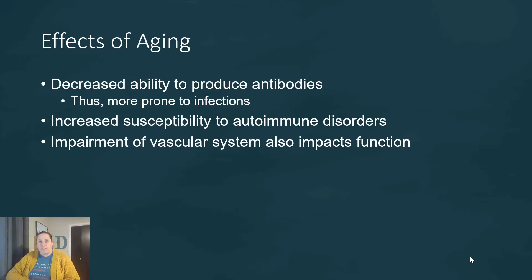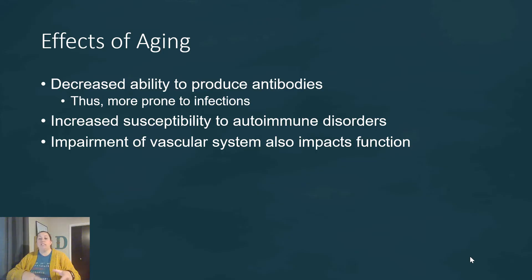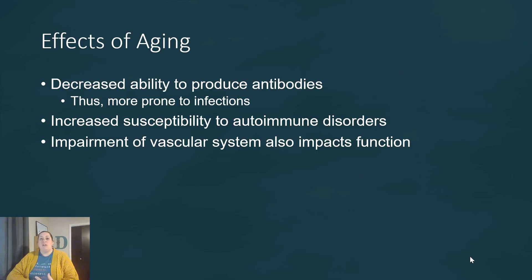What are the effects of aging on the lymphatic system? We see a decreased ability to produce antibodies, because those lymphocytes cannot fight like they did before, making the patient more prone to infections as they age. There's also an increased susceptibility to autoimmune disorders, where our immune system forgets what we look like versus an invader and starts attacking ourselves instead. And an impaired vascular system that happens as we age — conditions like congestive heart failure or coronary artery disease — would also impact the lymphatic system, causing swelling and other lymphatic issues because they are closely linked.